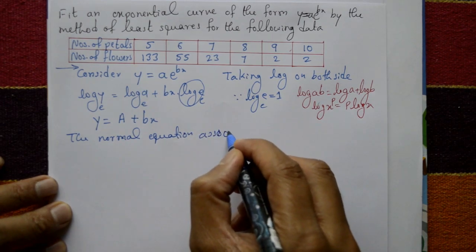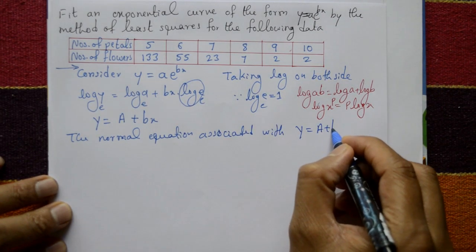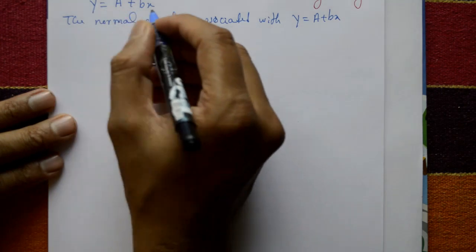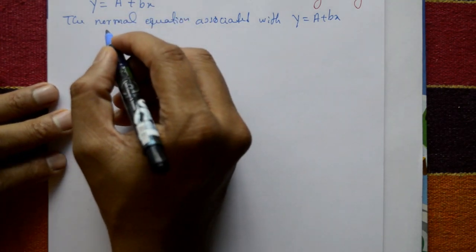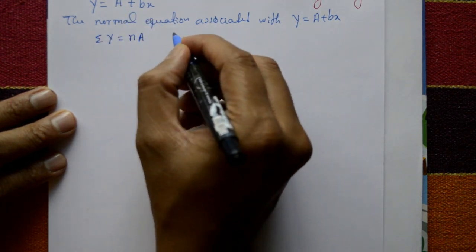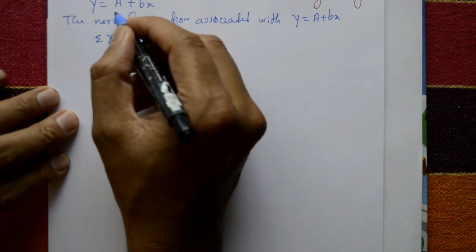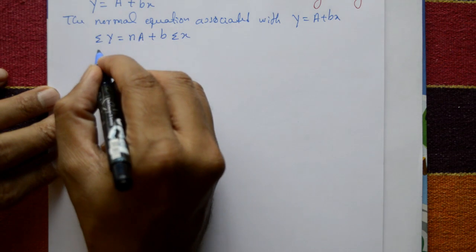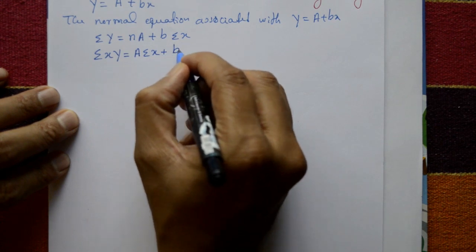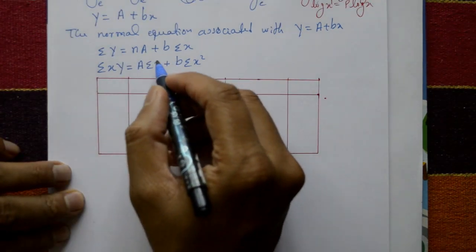The normal equations associated with Y = A + bx are: taking summation, the first normal equation is ΣY = nA + bΣx, and multiplying by x and summing, the second is ΣxY = AΣx + bΣx².